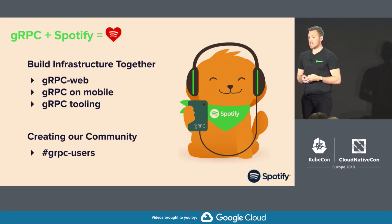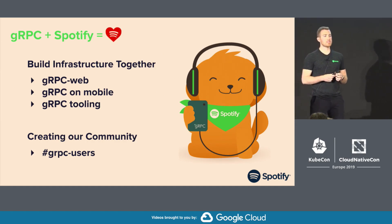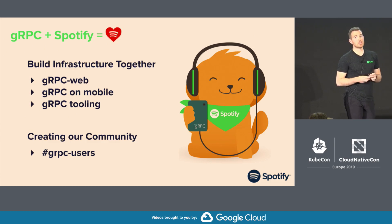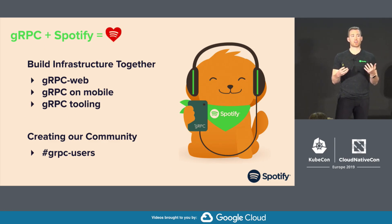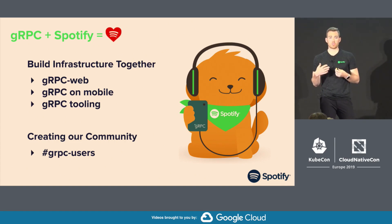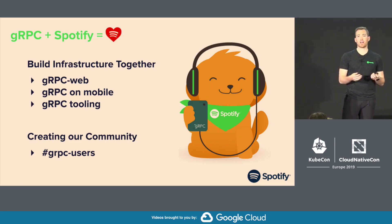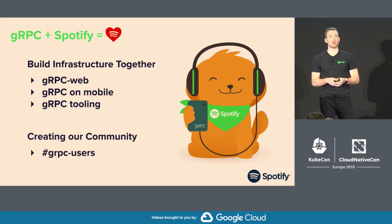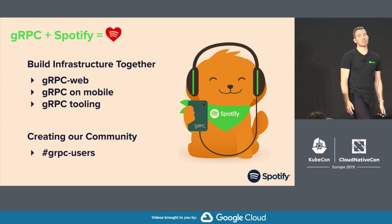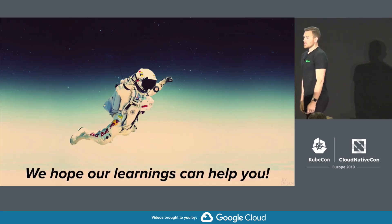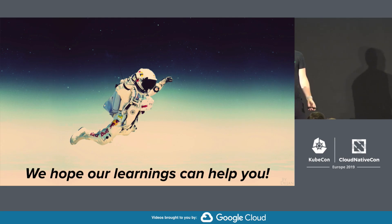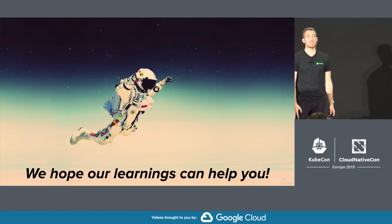Internally, a big success story is that creating a gRPC users community has been hugely effective. It started with people asking questions of the infrastructure folks and sharing insights. But now we've found that the infrastructure folks hardly answer any of the questions anymore — it's all people within the community who have integrated it in other parts of the company for completely different use cases, sharing their insights and intelligence. Our hope is to build this infrastructure together as we move forward.